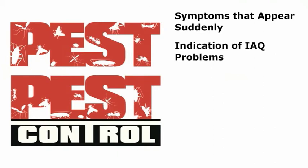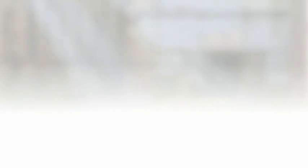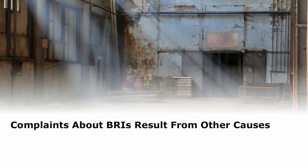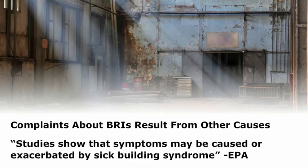Symptoms that appear suddenly after a change in a building, such as painting or pesticide application, are another indication of IAQ problems. Some people may be affected by IAQ problems while others who share the space may not be. Complaints about BRIs may result from other causes, such as illness contracted in another location, acute sensitivity including allergies, job-related stress or dissatisfaction, and other psychosocial factors. According to the U.S. Environmental Protection Agency (EPA), studies show that symptoms may be caused or exacerbated by sick building syndrome.